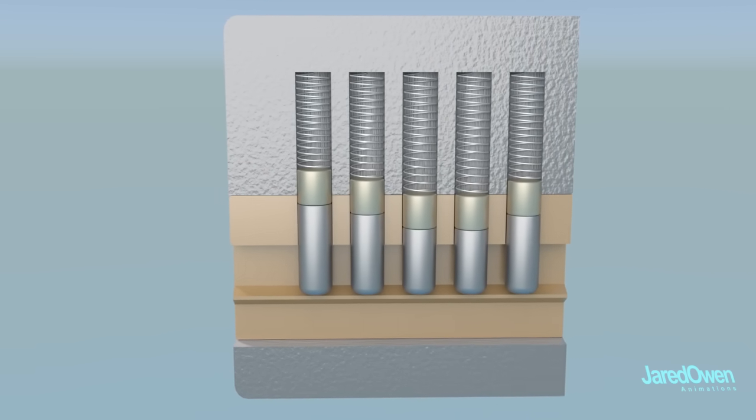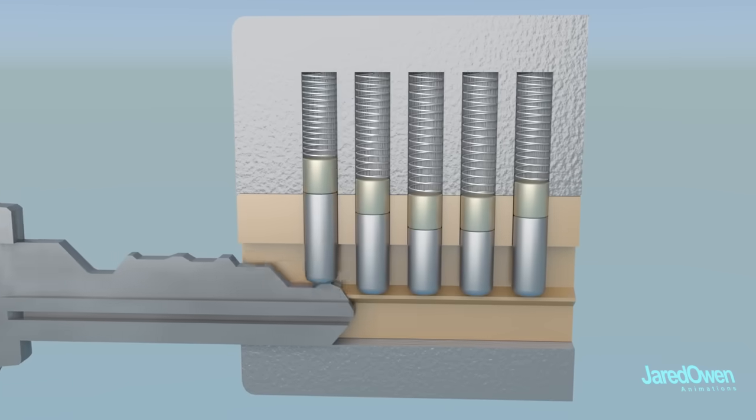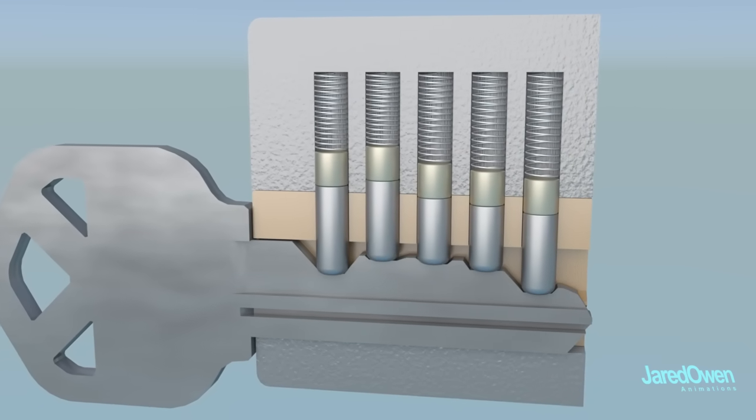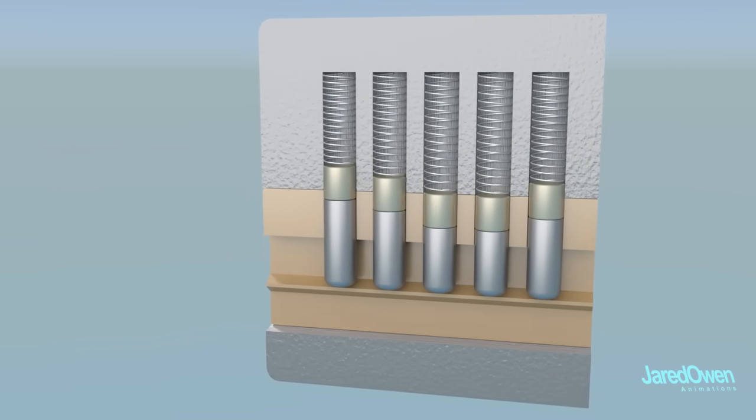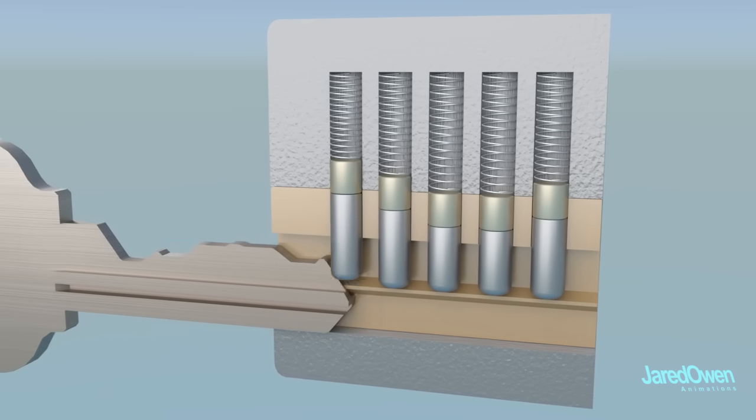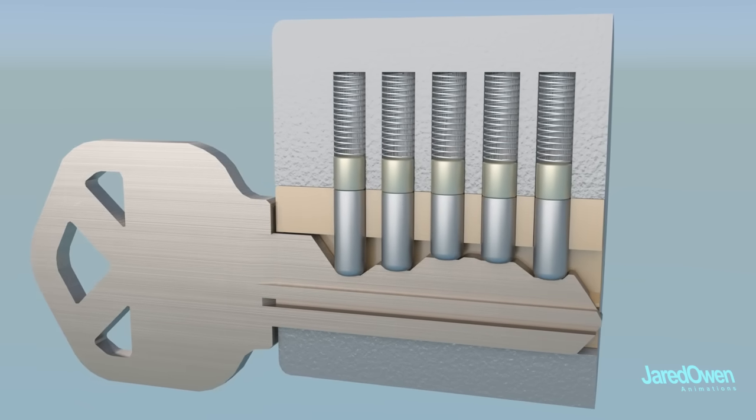Now watch what happens when we insert the wrong key. The pins are not lined up, which means the plug won't rotate. When we insert the correct key, everything lines up and the plug turns.